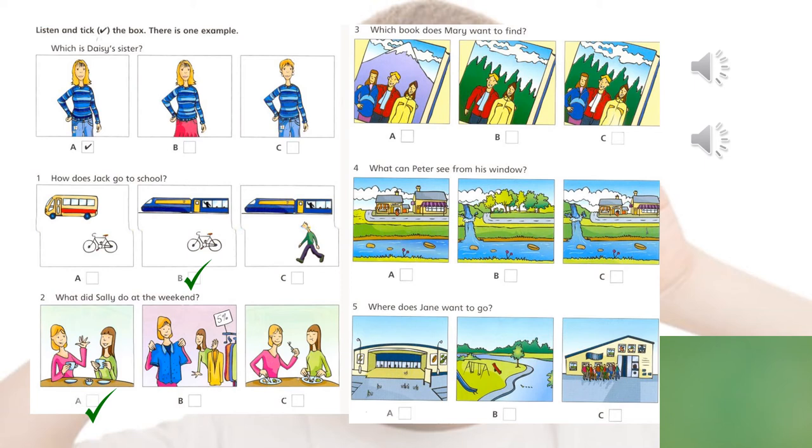Which book does Mary want to find? It's called something mountain, but there's no mountains at the back. There's a big forest, and there's a man and two women. So which one is the correct answer? Letter C.